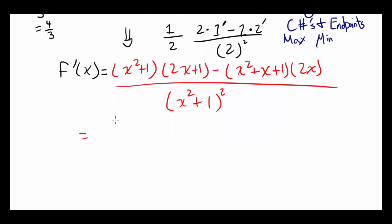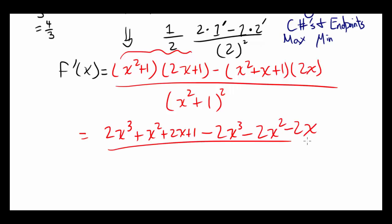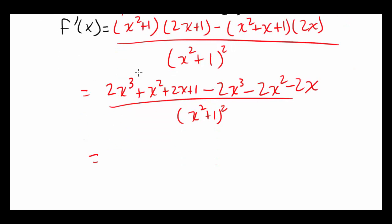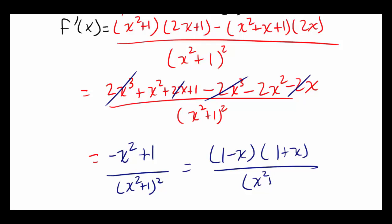Expanding the numerator: (x² + 1)(2x + 1) gives 2x³ + x² + 2x + 1. Subtracting (x² + x + 1)(2x) gives minus 2x³ minus 2x² minus 2x. After cancellation, the numerator becomes -x² + 1, giving f prime = (1 - x)(1 + x) / (x² + 1)².